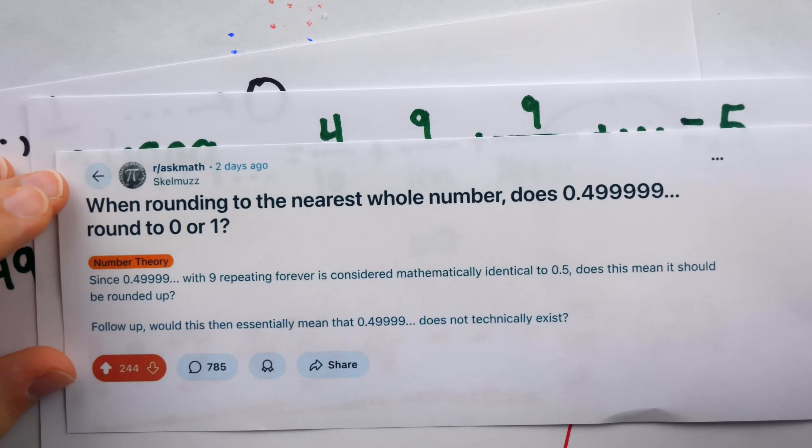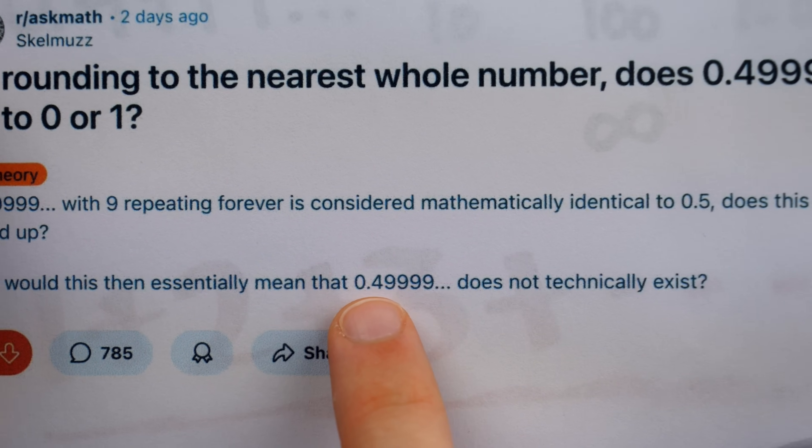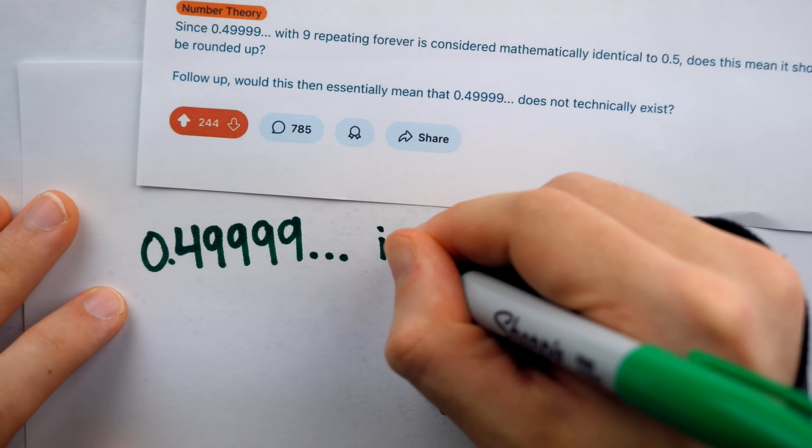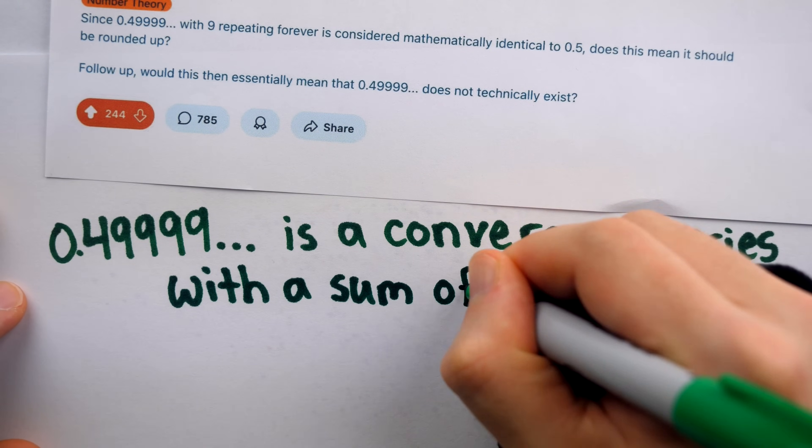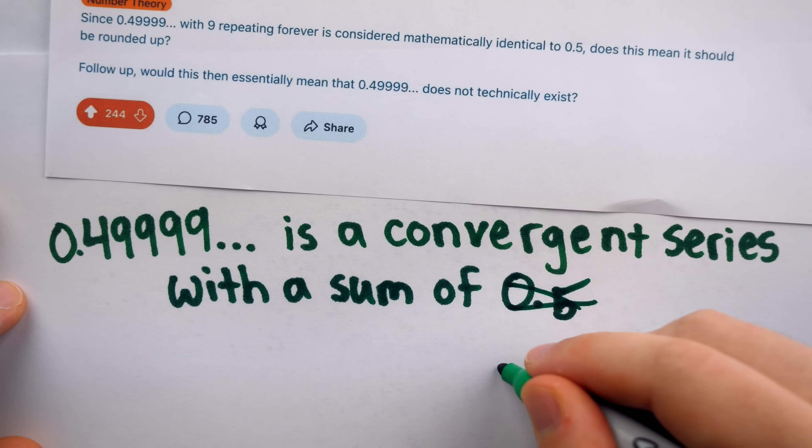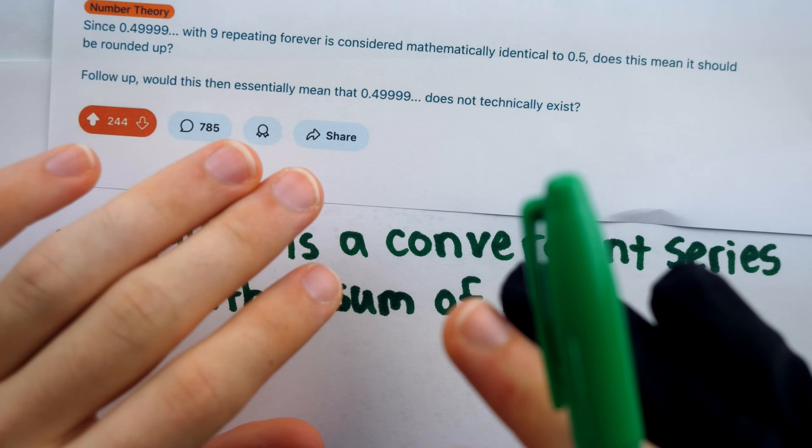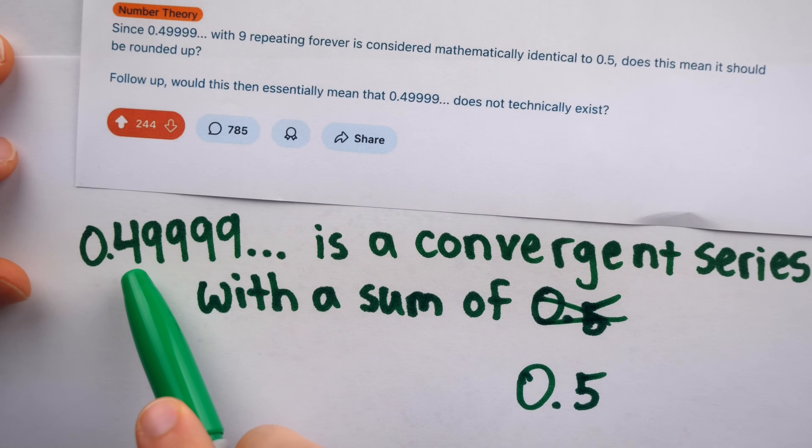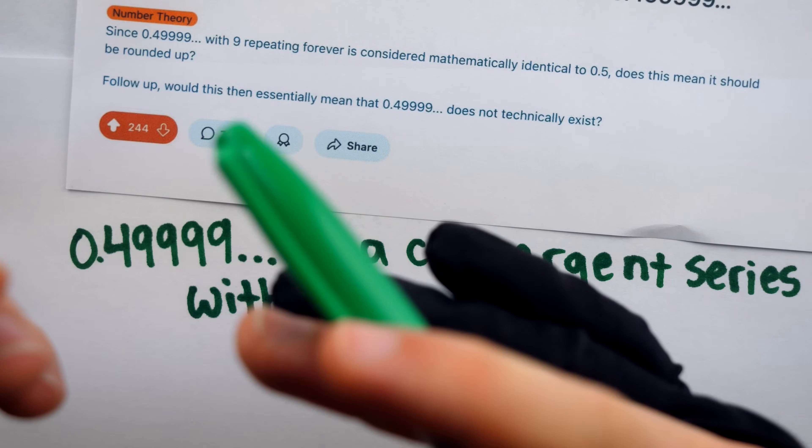Coming back to the original post and the second part of the question, would this essentially mean that 0.49999 repeating does not technically exist? And the answer is no, it doesn't mean that. 0.49999 repeating does exist. It's a convergent series with a sum of 0.5. If you oppose the assignment of finite values to certain infinite sums, you might contend that 0.49999 repeating doesn't exist, but that would be a very non-mainstream take.